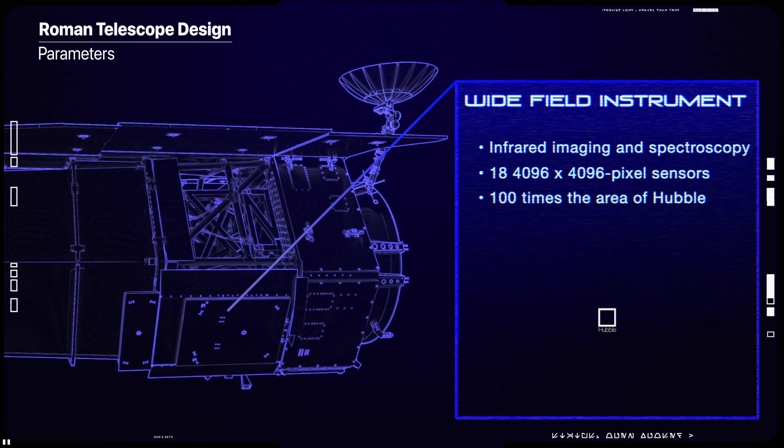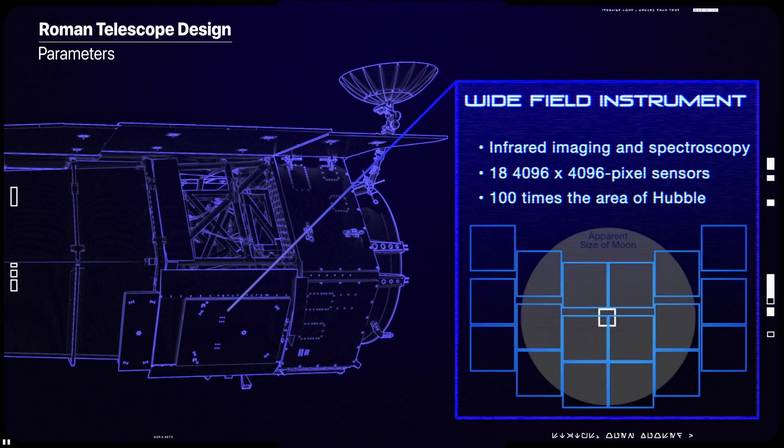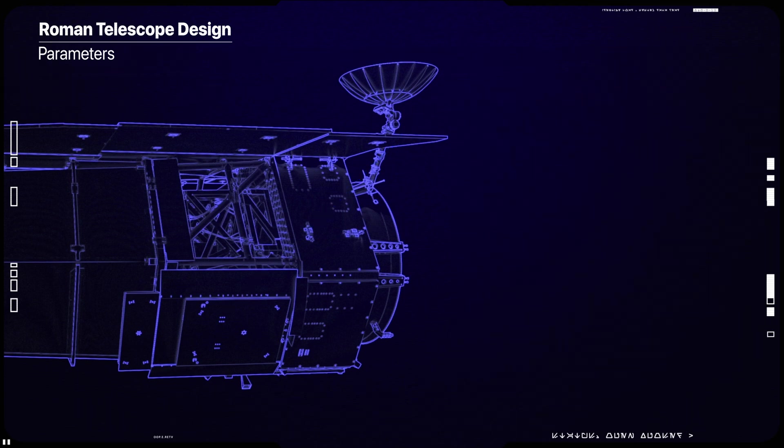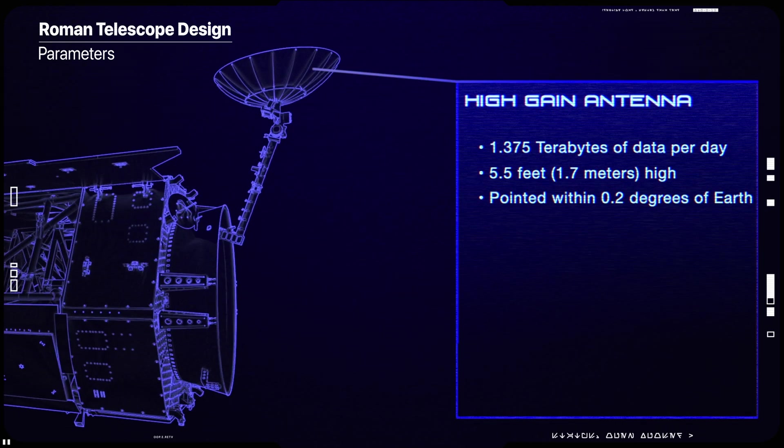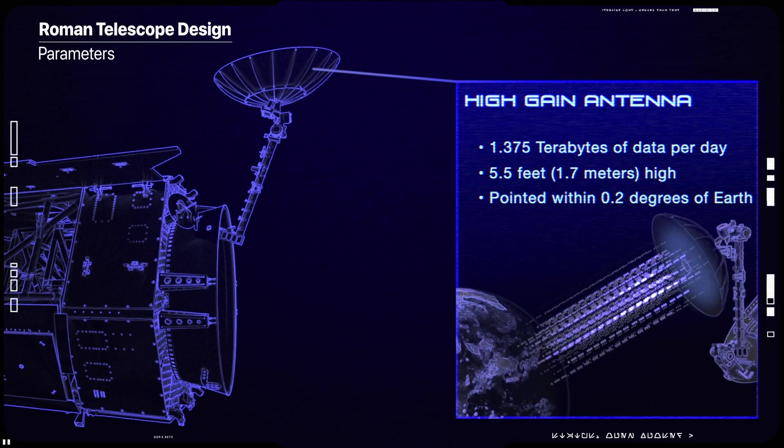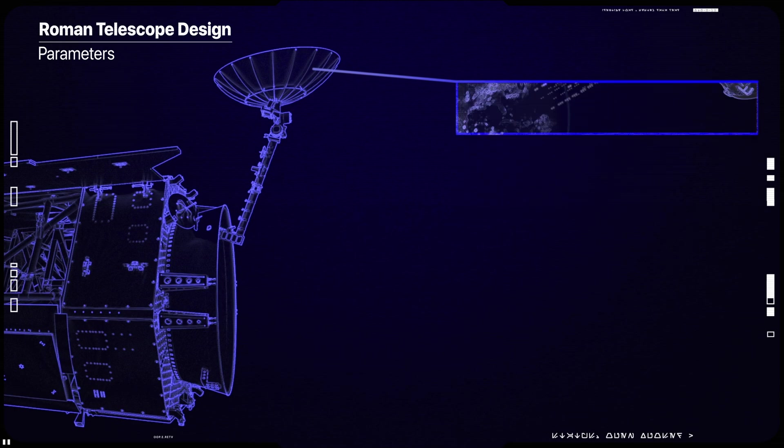It will have the sensitivity and resolution comparable to Hubble, but with a field of view 100 times larger, combining excellent image quality with survey power. This means a single Roman image will hold the equivalent detail of 100 pictures from Hubble.